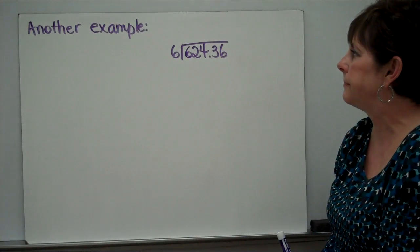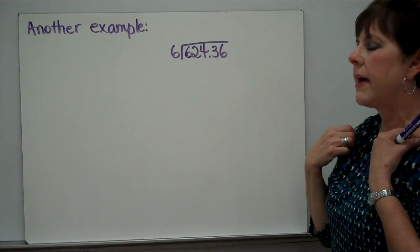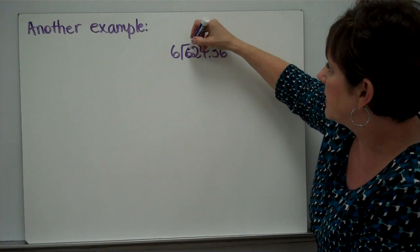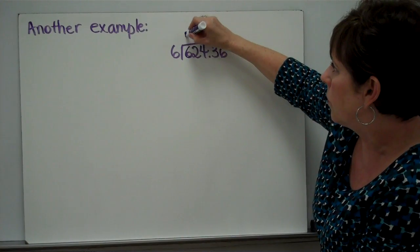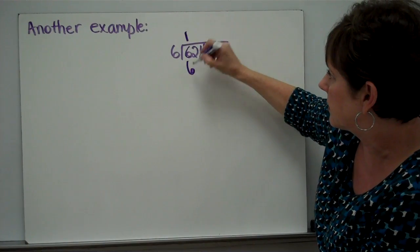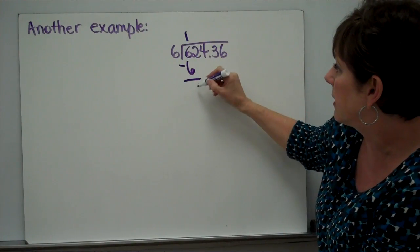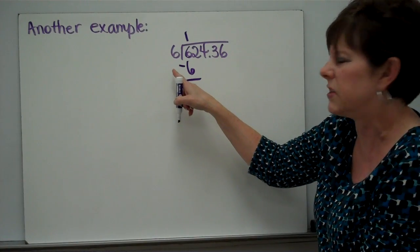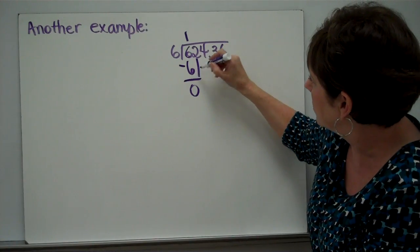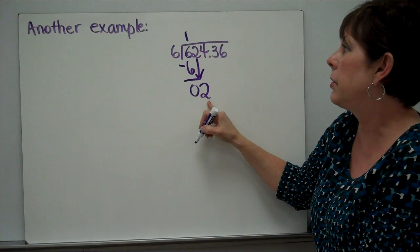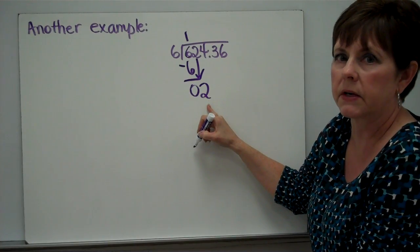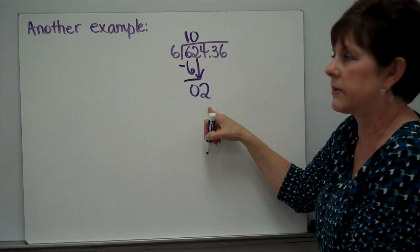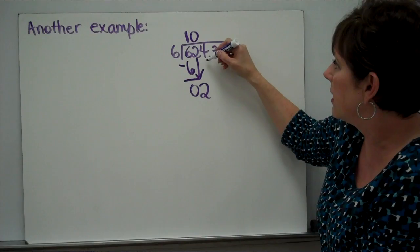Here's another example. This is 624.36 divided by 6. Here we go. 6 can be divided by 6 one time. 1 times 6 is 6. Subtract. 6 minus 6 is 0. Compare. 0 can it be divided by 6? No. Bring down the 2. Can 2 be divided by 6? No. So, we put a 0 here because it cannot be divided by 6. Bring down the next number.